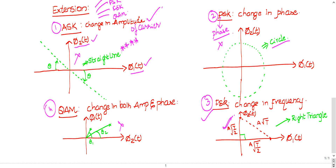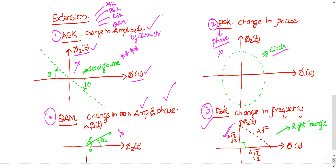The fourth type is Quadrature Amplitude Modulation (QAM), where both amplitude and phase are changed — it is a combination of ASK and PSK. Here the constellation diagram is irregular because it is like clubbing a circle and a straight line together; you will get asymmetric shapes. In the exam you can easily eliminate QAM, and many times they will not ask questions about it. Try to remember ASK, PSK, and FSK.